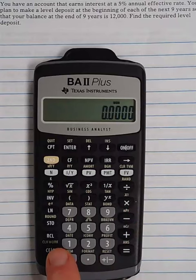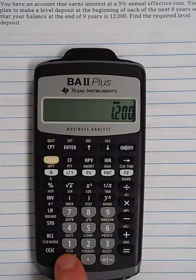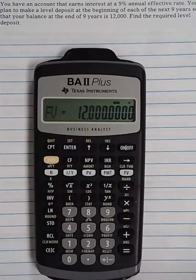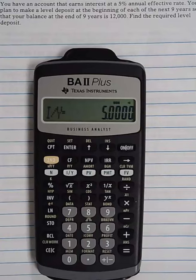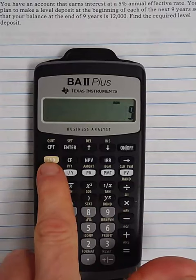We know the future value. The future value is 12,000. So we'll type in 12,000, hit future value. We know that the interest rate per period, in this case the annual effective interest rate, is 5%. So we'll hit 5 and I/Y. There are nine periods because it tells us that we're doing this for nine years. So 9 and hit N.